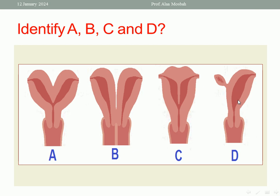D is a unicornuate uterus. As you see, there is one horn, unicornuate uterus, and the rudimentary horn on the other side. Again: A is bicornuate uterus, B is uterine didelphys, C is septate uterus, D is unicornuate uterus.